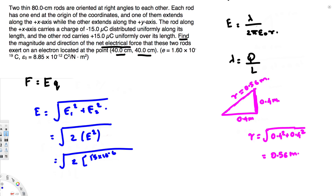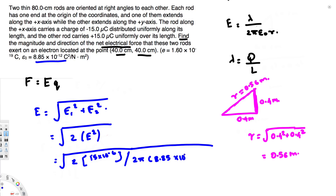The unit length is just one, so we don't need to worry about that. Dividing by 2πε₀r: ε₀ is 8.85 × 10⁻¹² and r is the distance we found, 0.56 meters. Calculating this gives E = 0.8 × 10⁶ newtons per coulomb. That is our electric field.